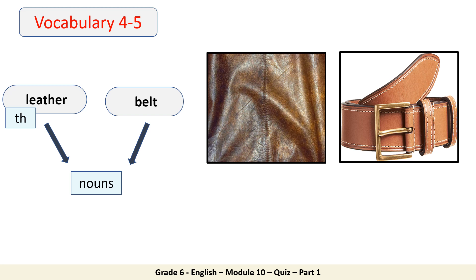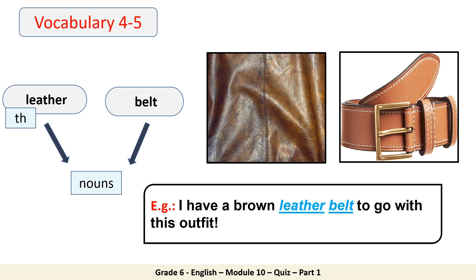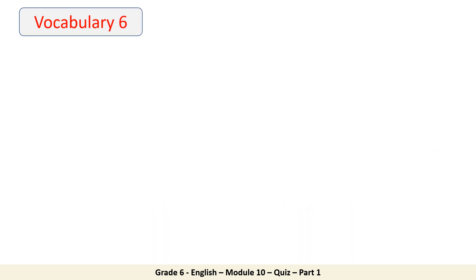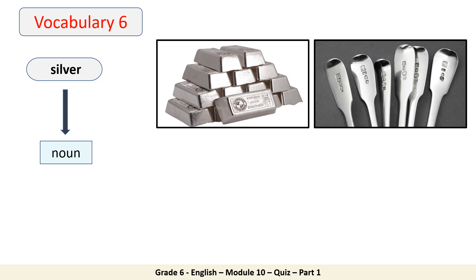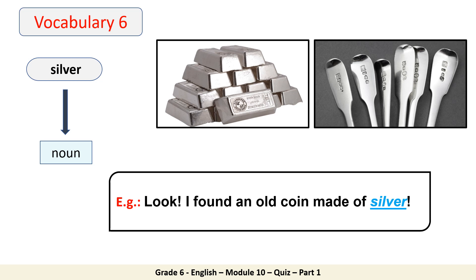Try to put them in a sentence: I have a brown leather belt to go with this outfit. Now let's see the sixth word — silver. Please repeat: silver. The 'er' is pronounced as 'er'. It's a noun. Try to use it in a sentence: I found an old coin made of silver.